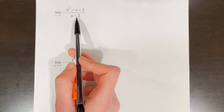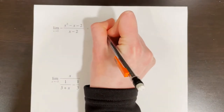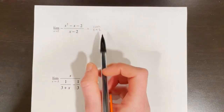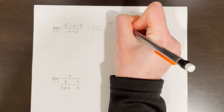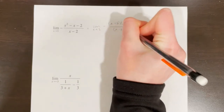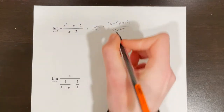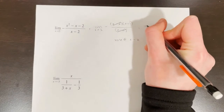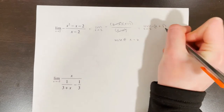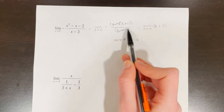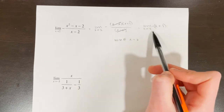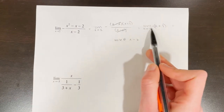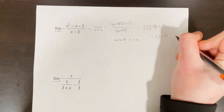Here's another rational function. I need to factor first, keeping limit notation until I use direct substitution. Factoring gives the limit as x goes to 2 of negative (x minus 2)(x plus 1) all over (x minus 2). I have a hole at x equals 2; I can cancel the common factor (x minus 2). This simplifies to the limit as x goes to 2 of negative (x plus 1). Now I can use direct substitution — plugging in 2 gives negative (2 plus 1), which is negative 3.